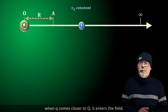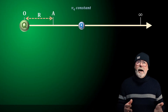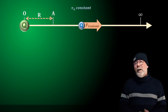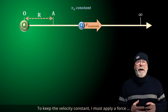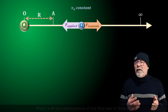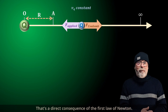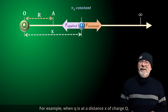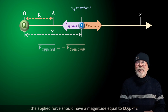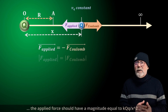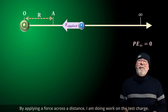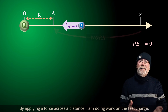When little q comes closer to charge big Q, it enters the field and therefore experiences a repulsive force to the right — the Coulomb force. To keep the velocity constant, I must apply a force of the same magnitude in the opposite direction, to the left. That's a direct consequence of the first law of Newton. For example, when charge little q is at a distance x from charge big Q, the applied force should have a magnitude equal to K·Q·q over x squared, directed towards the left. By applying a force across a distance, I am doing work on the test charge.